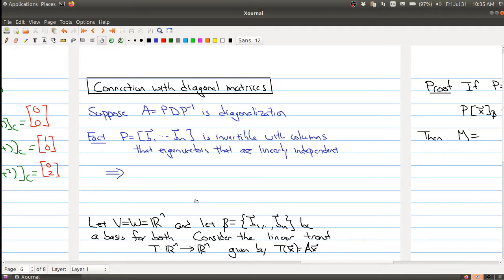Now what we want to do is look at where the connection with diagonal matrices comes from. When we're looking at diagonalization, we're going to be looking at a special case of what we've just been looking at. So here's the setup.